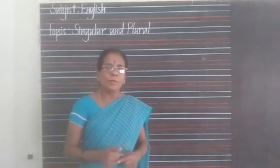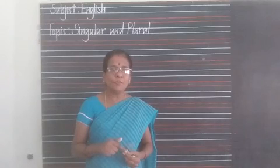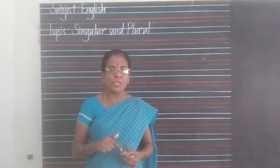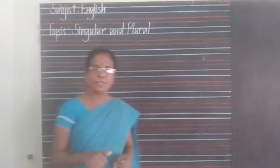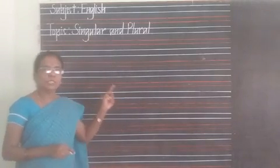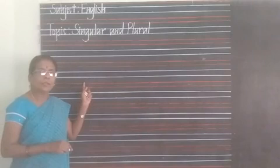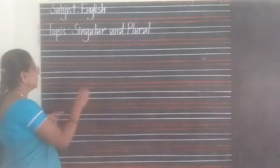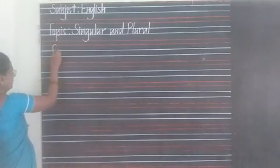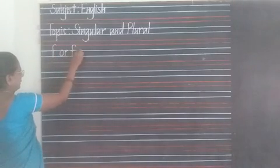To form the plural of nouns ending in F or FE, you need to add VES. You remove the F or FE and add VES in its place. So nouns that end in F or FE follow this rule.